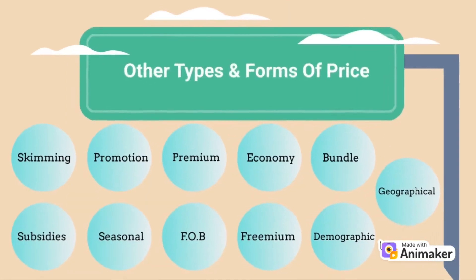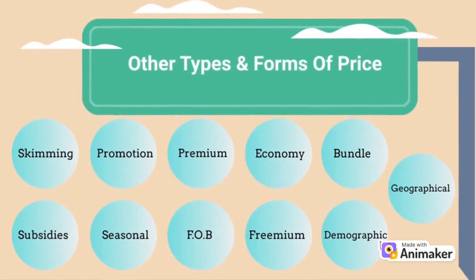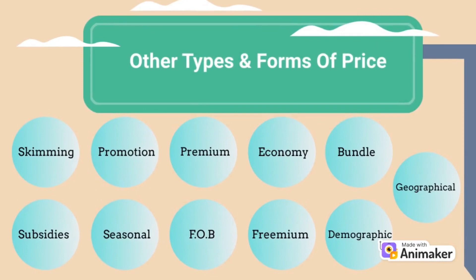The other types and forms of price are skimming, promotion, premium, economy, bundle, geographical, demographic, freemium, FOB, seasonal, and subsidies.